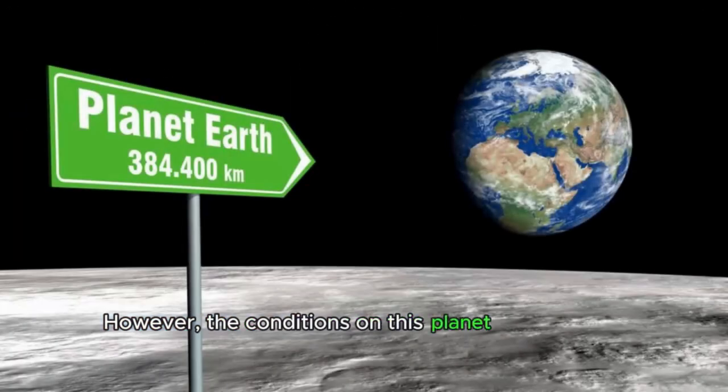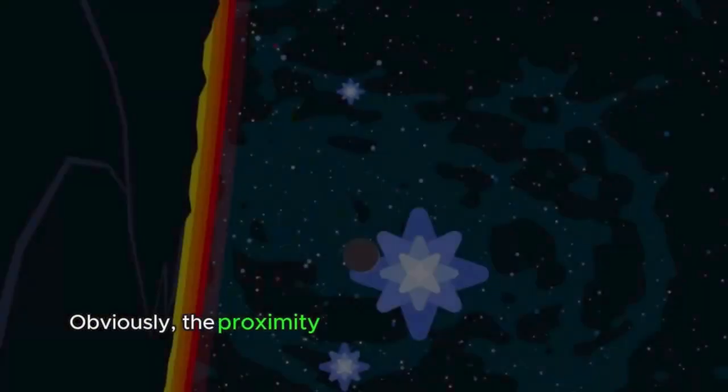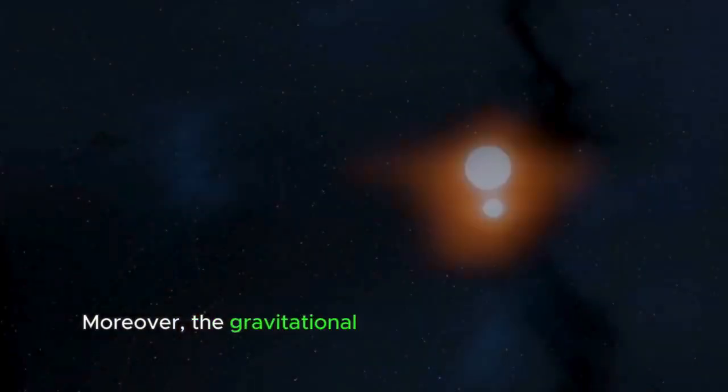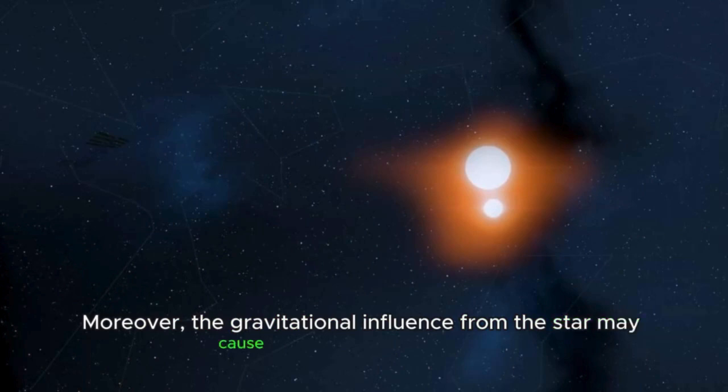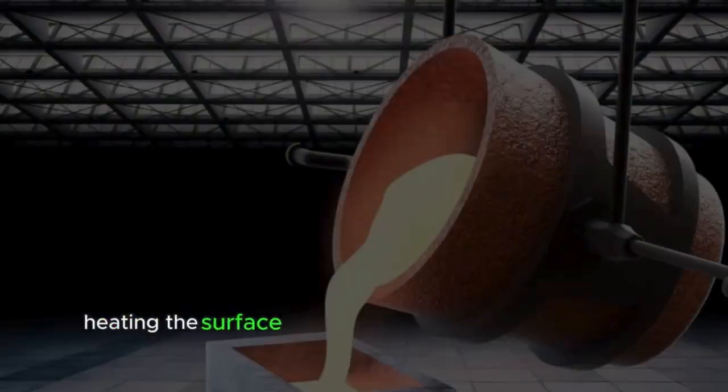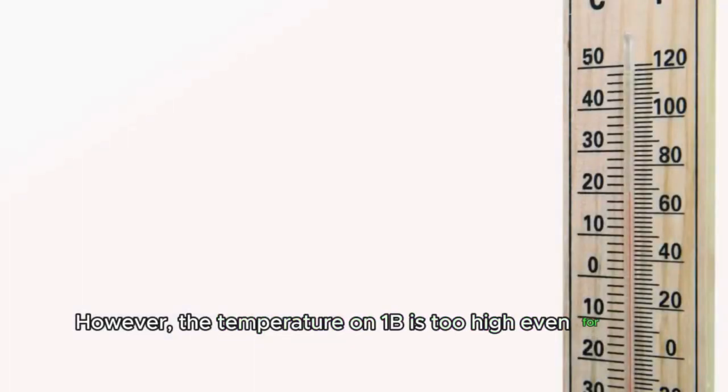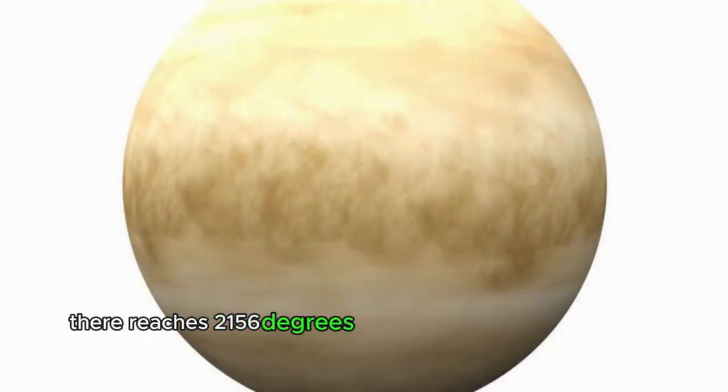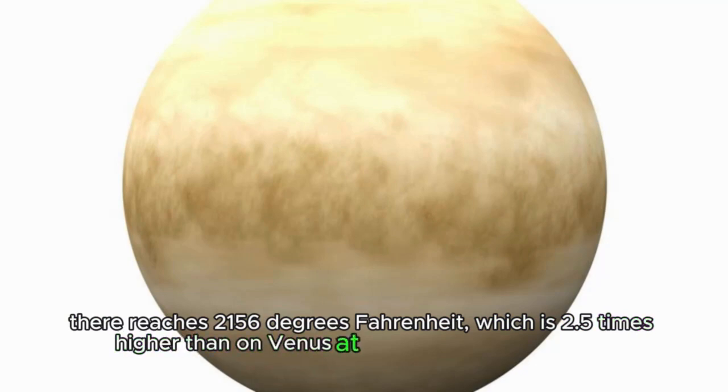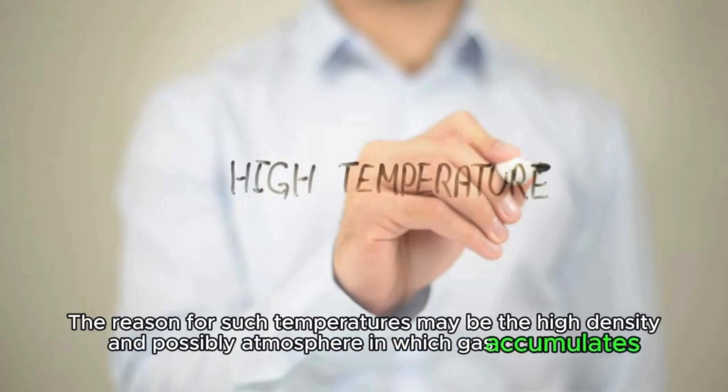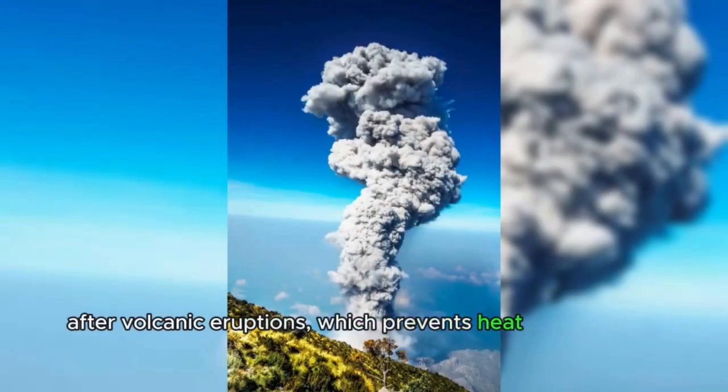However, the conditions on this planet are far from earthly. Obviously, the proximity to the parent star must result in a very heated surface. Moreover, the gravitational influence from the star may cause strong volcanic activity, heating the surface even more and melting the internal rocks. However, the temperature on 1b is too high even for this. There it reaches 2,156 degrees Fahrenheit, which is 2.5 times higher than on Venus at 860 degrees Fahrenheit. The reason for such temperatures may be the high density and possibly atmosphere, in which gas accumulates after volcanic eruptions, which prevents heat from leaving the planet.